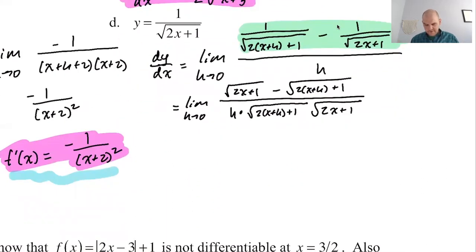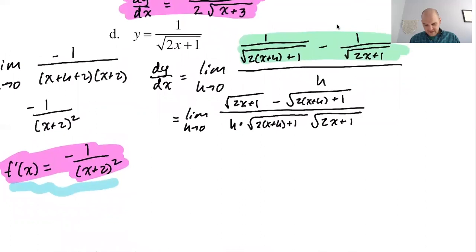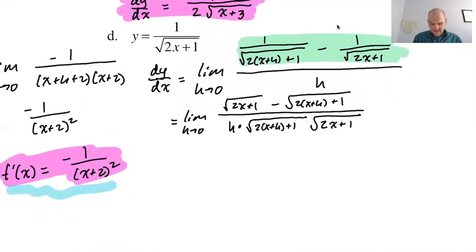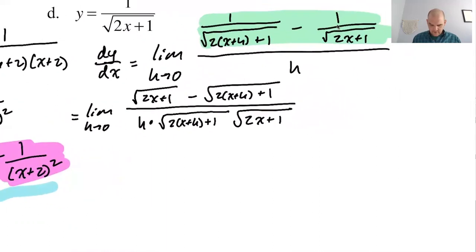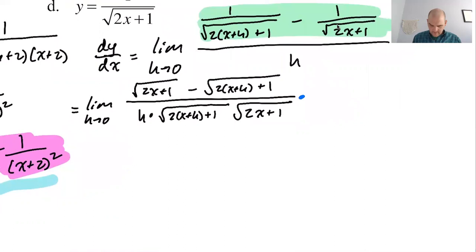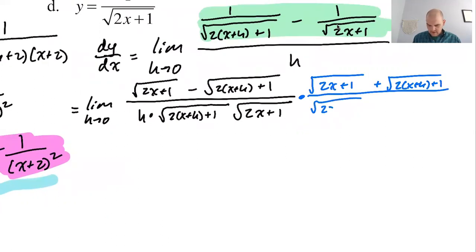Now we want to rationalize — I see something I can rationalize. I'm also going to conserve a little bit of space. We're going to multiply the top and the bottom of this by the square root of 2x plus 1 plus the square root of 2 times the quantity x plus h plus 1, over the same thing — a weird form of 1 that turns out to be very useful in this particular case.